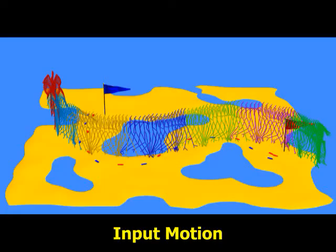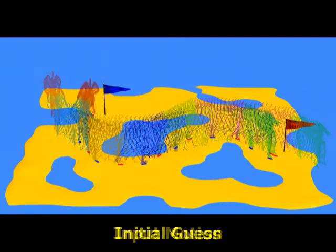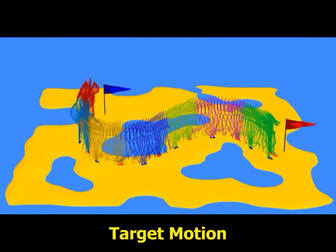Our final task is to generate realistic locomotion from the sequence of input motion clips and that of target footprints. We can formulate this task as a motion retargeting problem. To solve this problem, we first estimate the body trajectory of the unknown target motion to assemble an initial guess. With this initial guess, we retarget the input motion clips for the target footprints to obtain a desired motion.